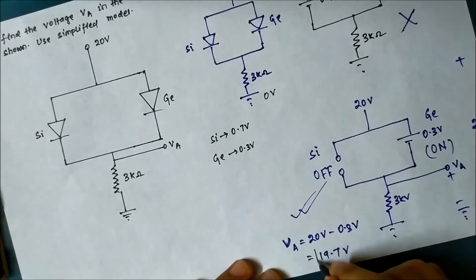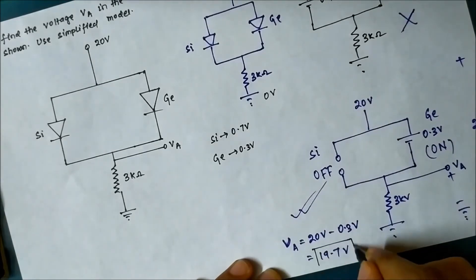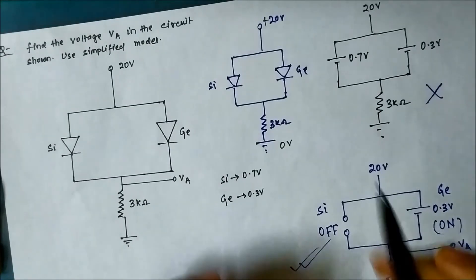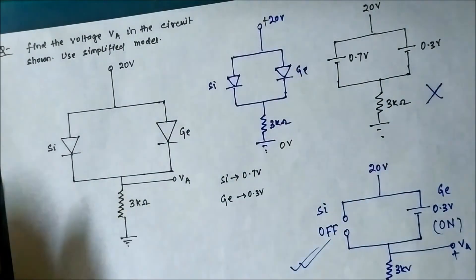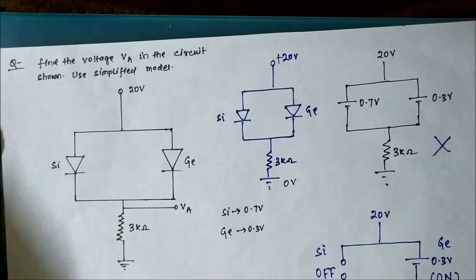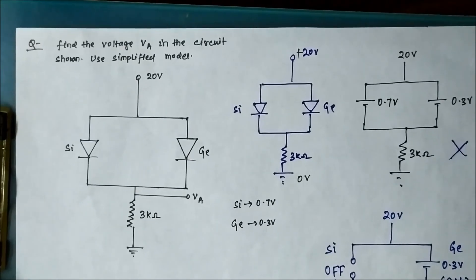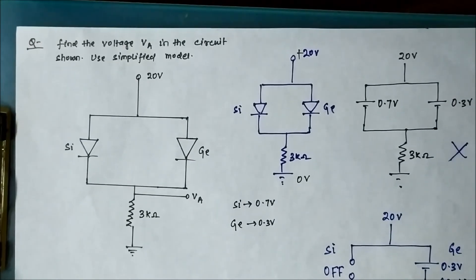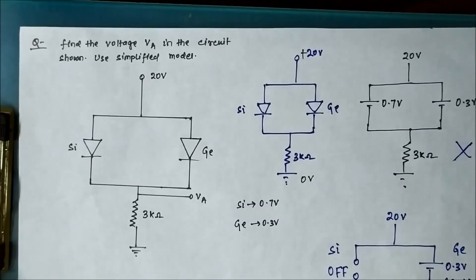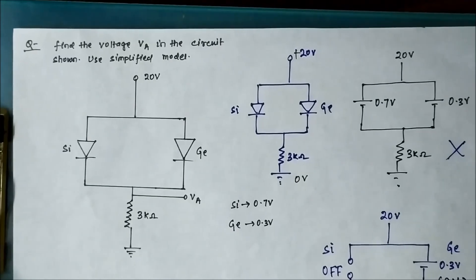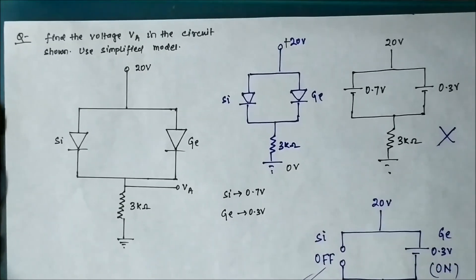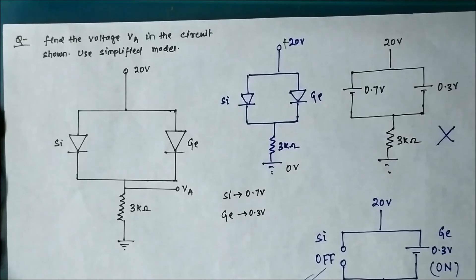Our answer is 19.7 volt. The main concept was to understand how to deal with circuits having different types of diodes with different cut-in voltages. I hope you liked this video. Please subscribe to the channel 'Engineering Tutorial' for more videos related to electrical and electronics engineering. Have a great day, thank you very much.